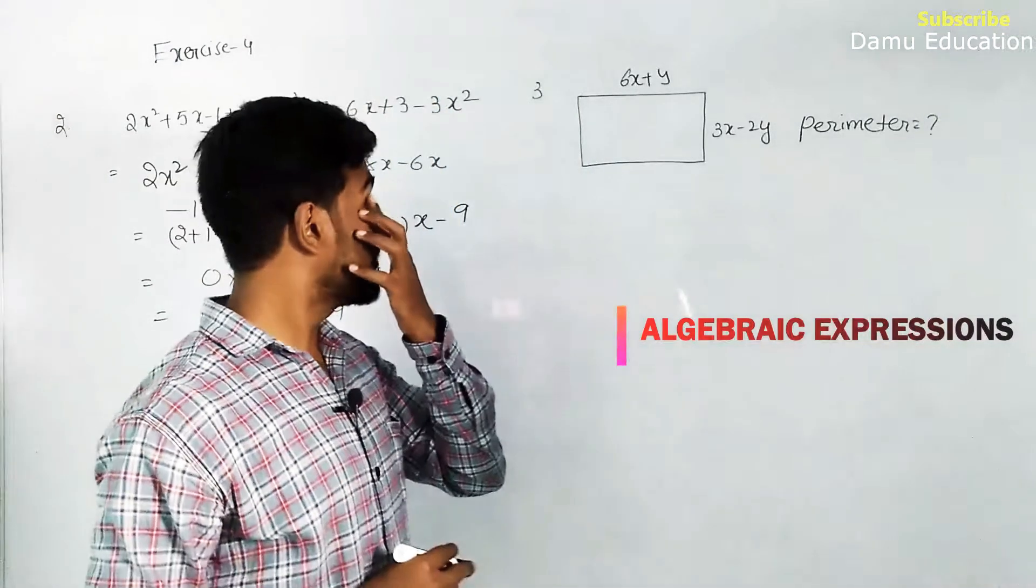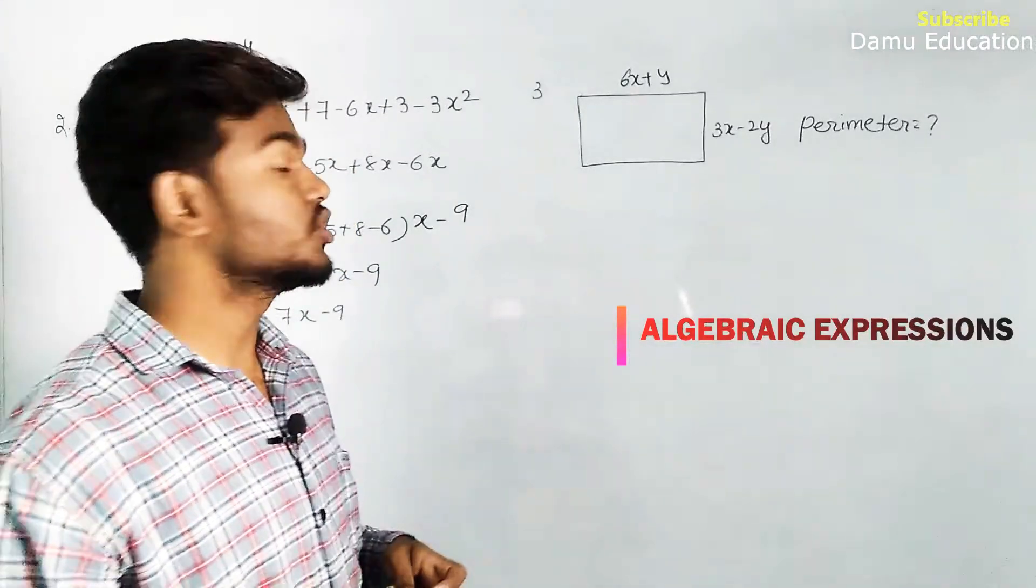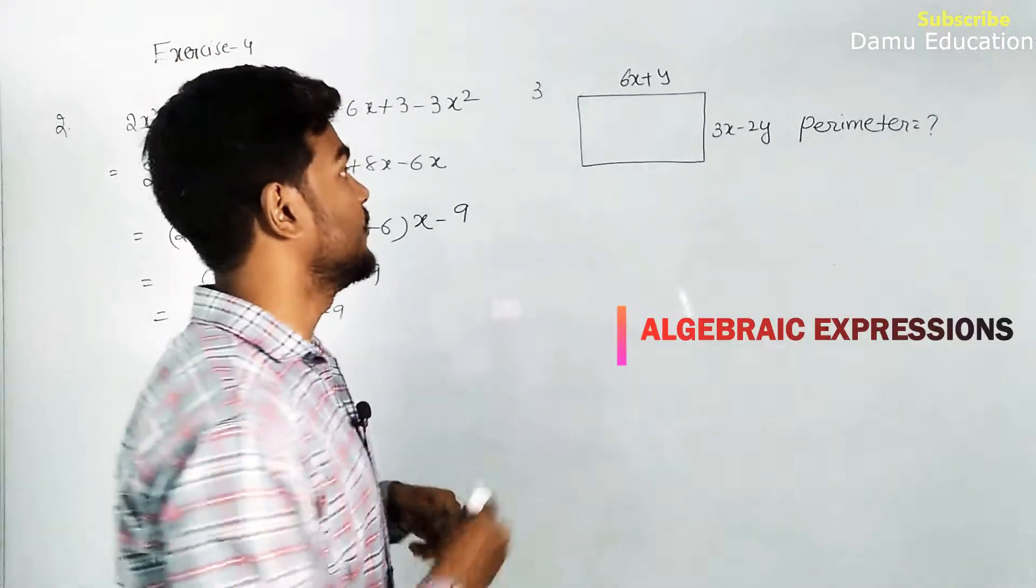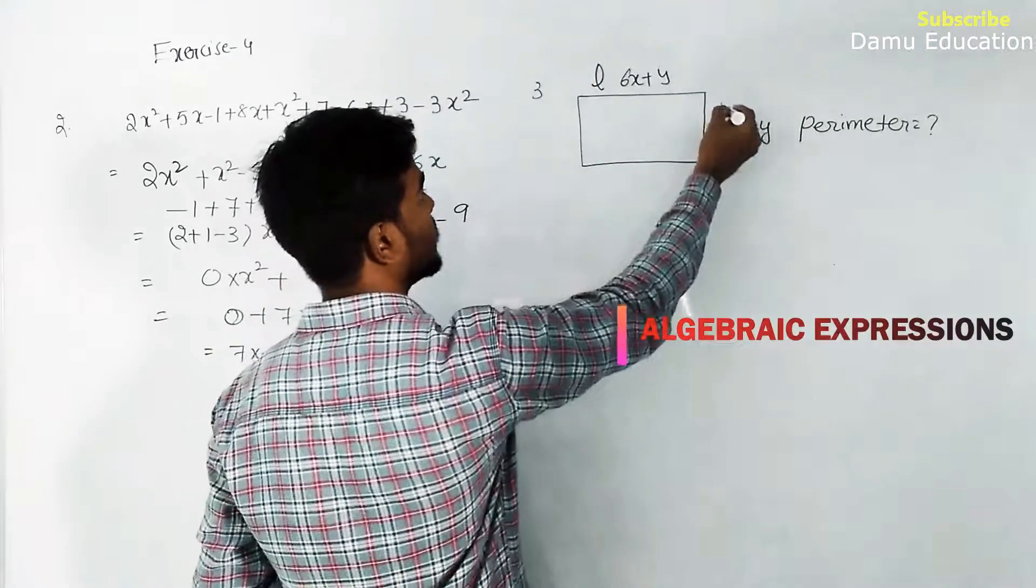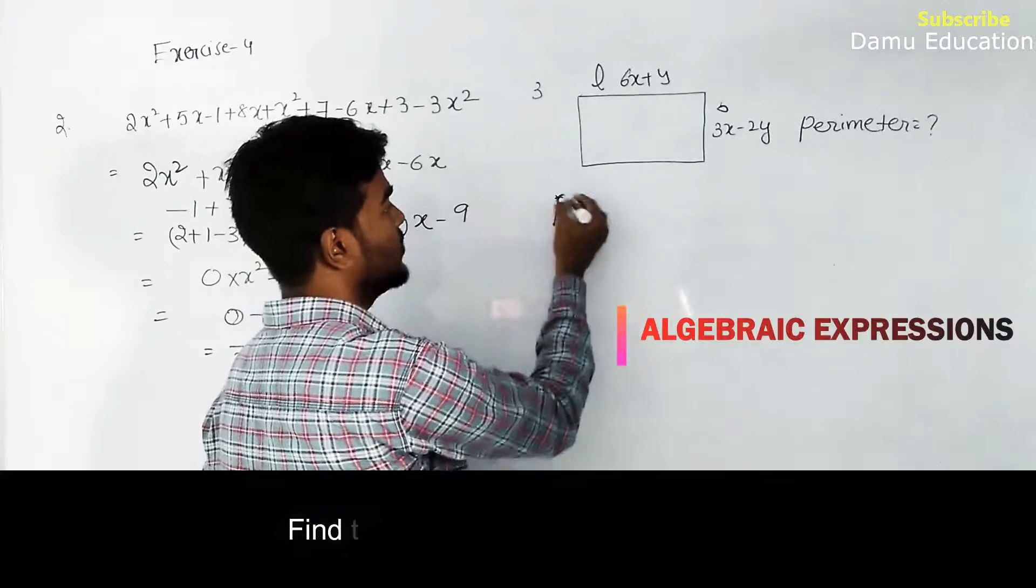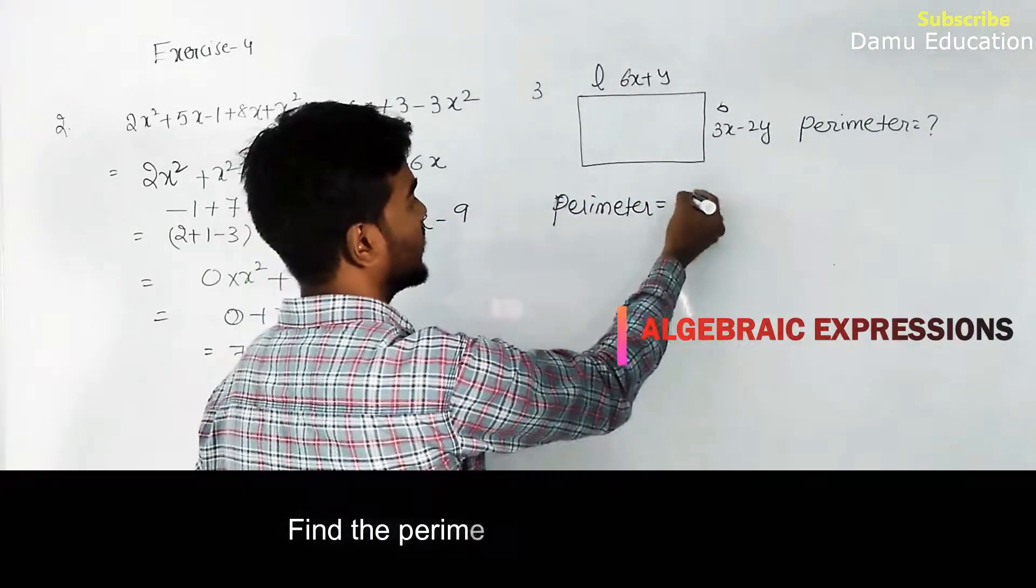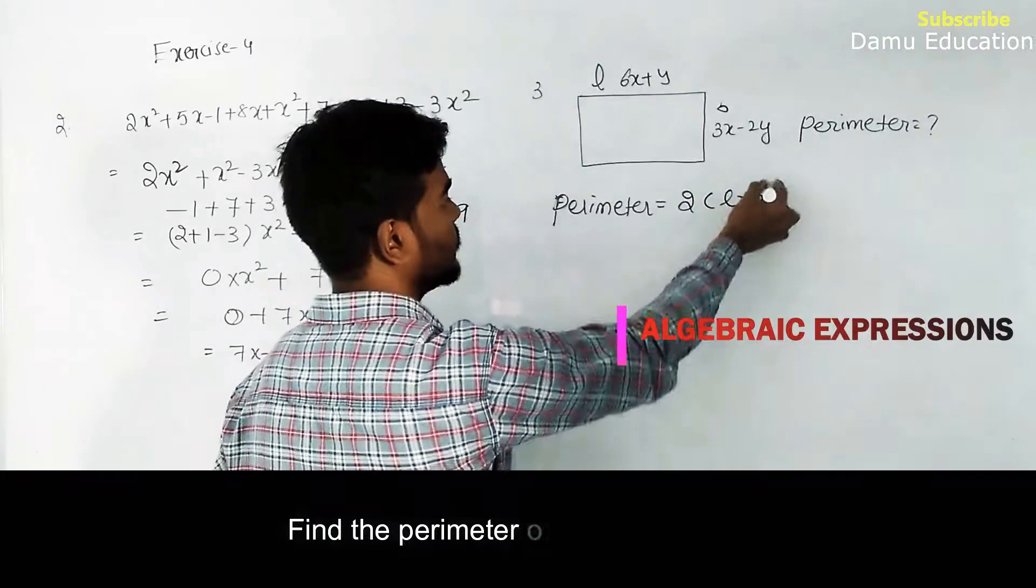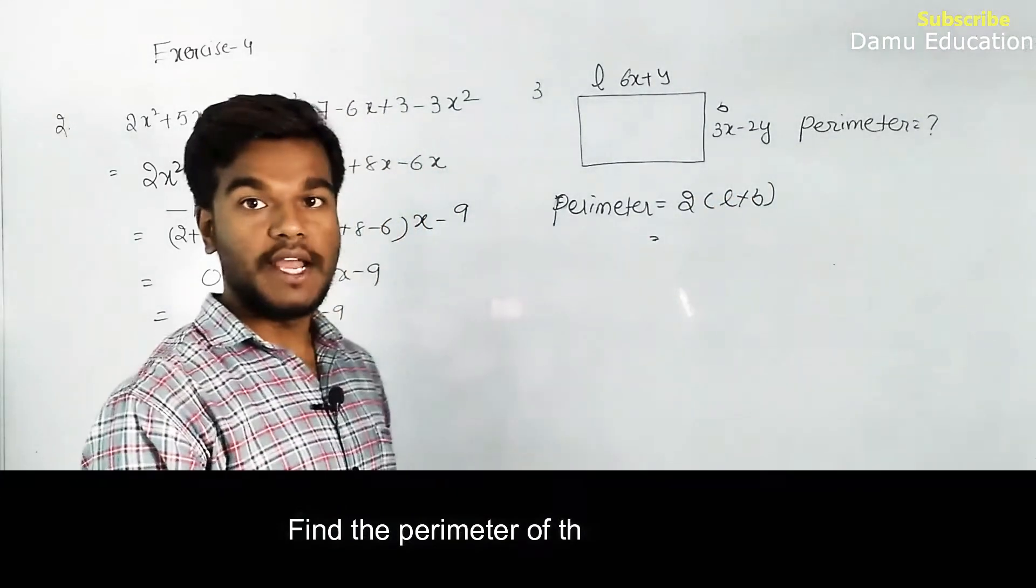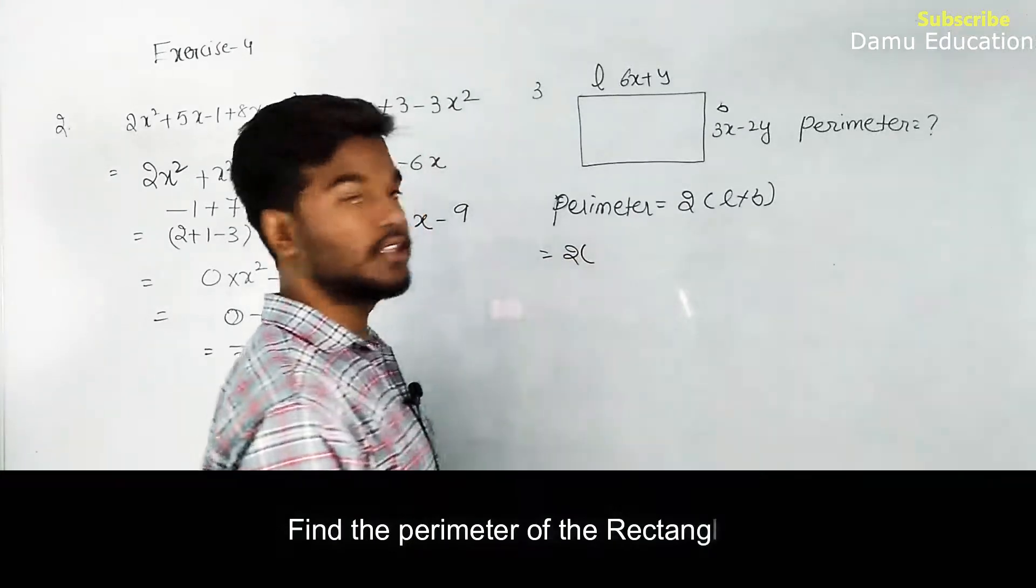Next question is find the perimeter for the given rectangle with given length and breadth. Let's take length that one, this one breadth. Here we can find by using the formula: perimeter of rectangle will be 2 into l plus b.